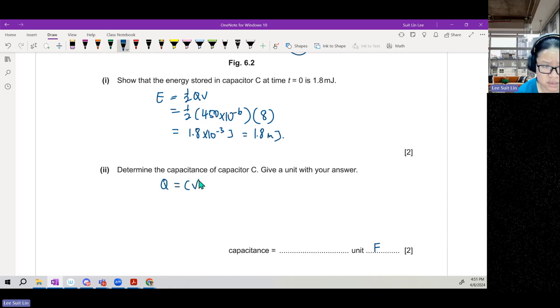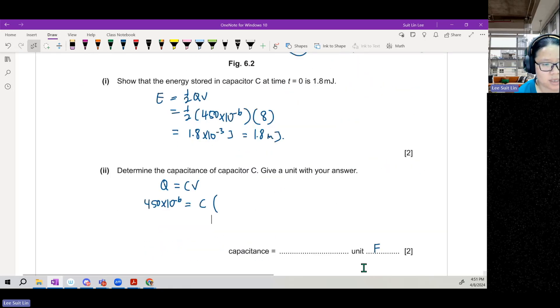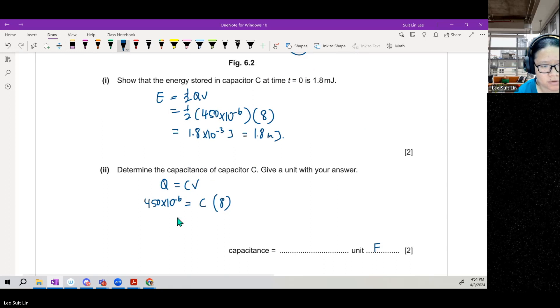Capacitance is farad. So Q equals CV. 450 times 10 to the power of negative 6, C, V is 8. Charged to 8. So C would be equivalent to 5.6 times 10 to the power of negative 5.